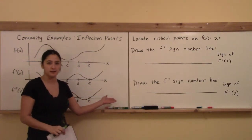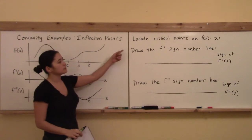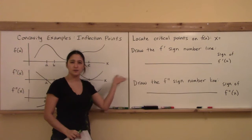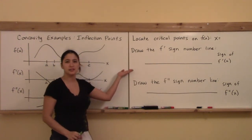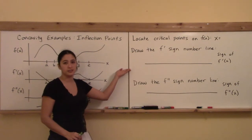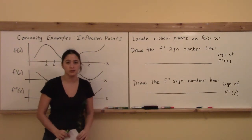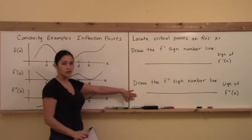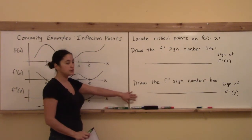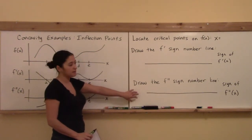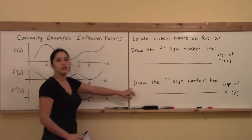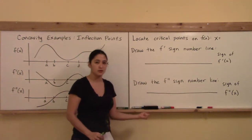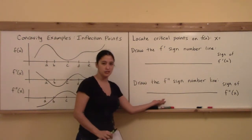We're going to go back to the f' sign number line from last week. We'll locate the critical points on f(x) and draw the f' sign number line, which classified all critical points as either relative max, relative min, or horizontal point of inflection. Then we'll compare that with the f'' sign number line, where we tick off places where the second derivative equals zero and see where it changes sign.